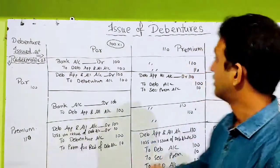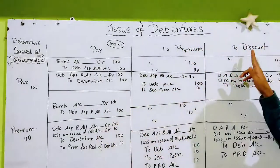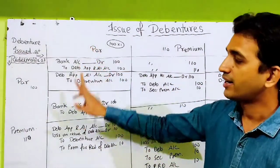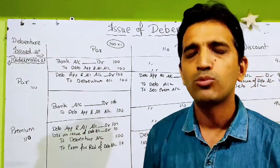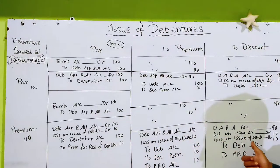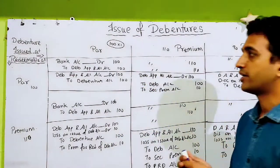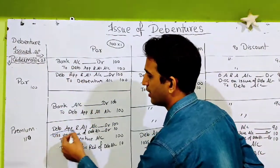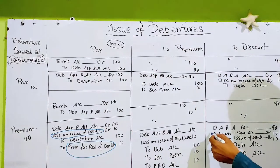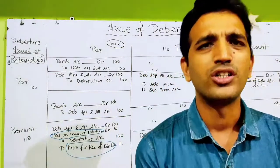Debenture issued at discount, redeemable at premium. Debenture issued at par, redeemable at premium — redeemable at premium is 110. Premium for Redemption of Debenture, Discount on Issue of Debenture Account, और Loss on Issue of Debenture Account — यह mat bhool na. यह तीन नई चीज़ें हैं जो पहली बार आई: Loss on Issue of Debenture, Premium for Redemption of Debenture, और Discount on Issue of Debenture Account.